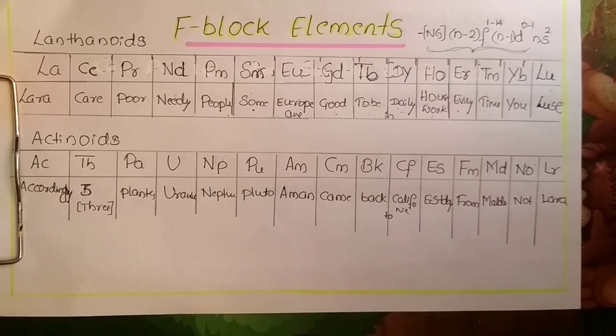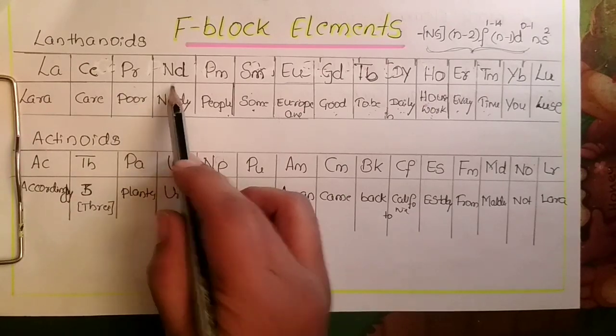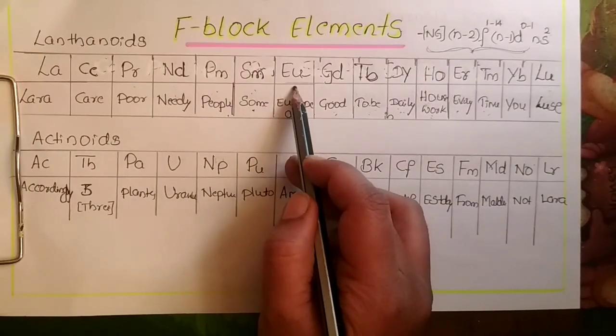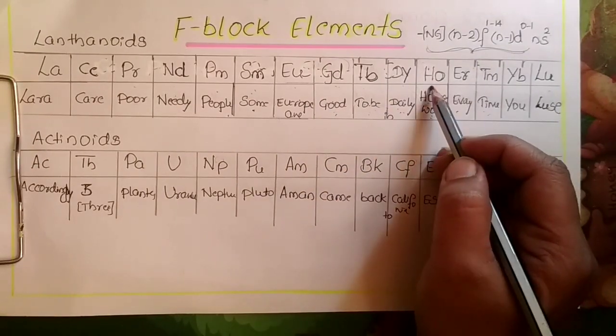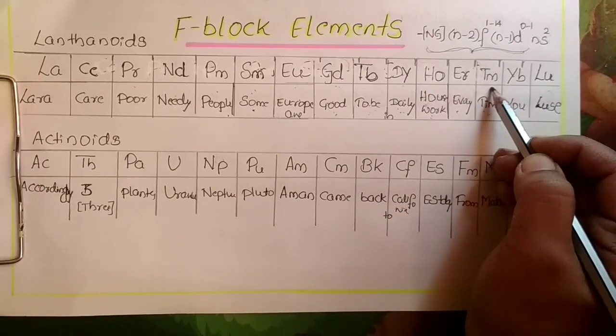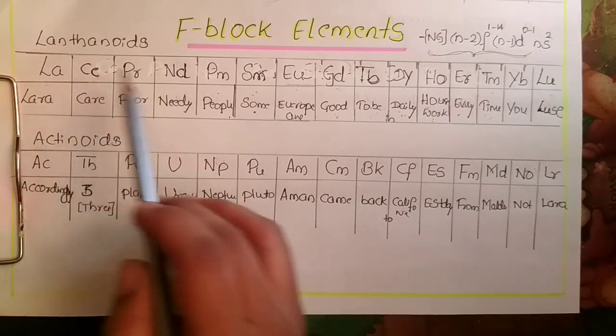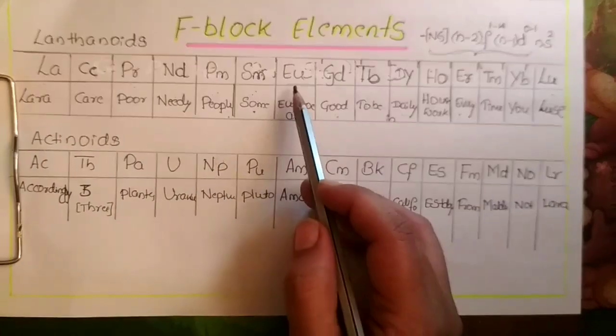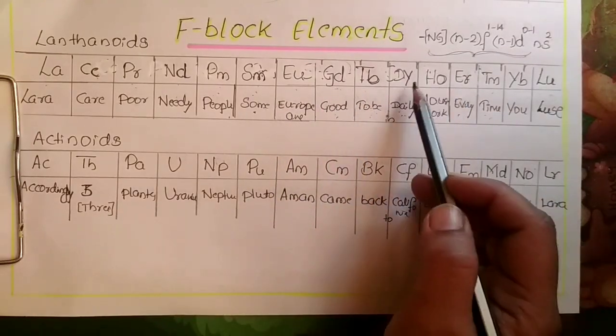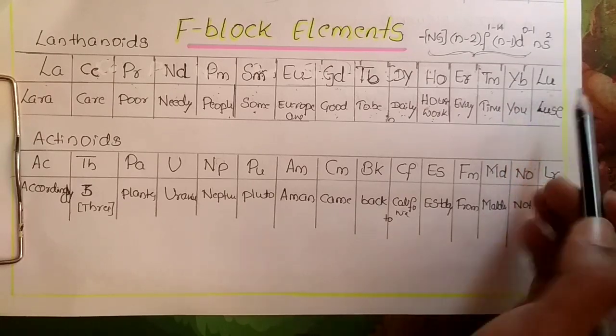F block elements with lanthanoid series include elements like lanthanum, cerium, praseodymium, neodymium, promethium, samarium, europium, gadolinium (this is very important), followed by terbium, dysprosium, holmium, erbium, thulium, ytterbium, then lutetium. You can remember this in a simple way.